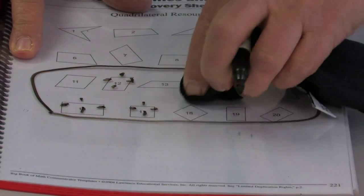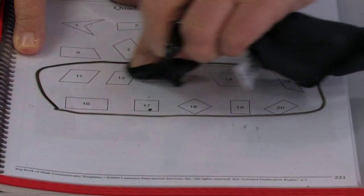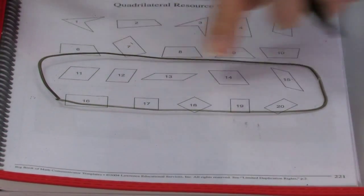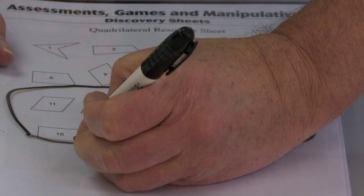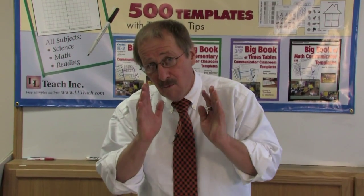Well, when you take a look at those parallelograms, what is the difference in the parallelograms between 11 and 15 and the parallelograms 16 through 20? Well, 16 through 20 appear to have right angles. Those appear to be rectangles.